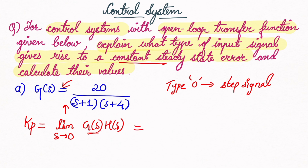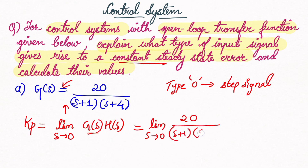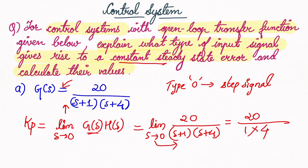So Kp = limit as s→0 of 20 divided by (s+1)(s+4). Substituting s = 0: 20 divided by (0+1)(0+4) = 20 divided by 1×4 = 20/4 = 5. So Kp = 5.